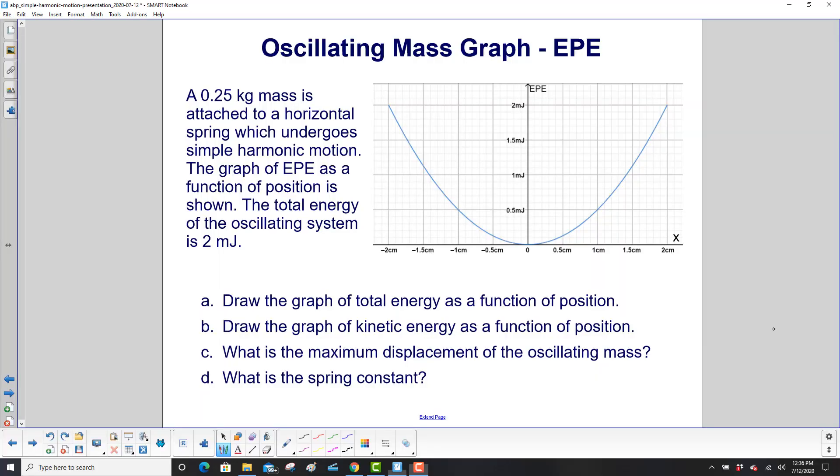Oscillating mass graph, elastic potential energy. A 0.25 kilogram mass is attached to a horizontal spring which undergoes simple harmonic motion. The graph of EPE as a function of position is shown. The total energy of the oscillating system is 2 millijoules. First thing, be very careful, we're not using SI units here. We're using centimeters and millijoules.